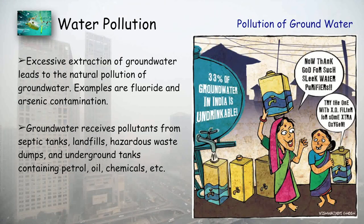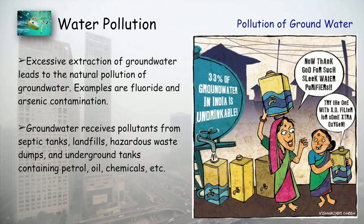Groundwater is also polluted. According to one image, 33% of groundwater in India is undrinkable. Excessive extraction of groundwater leads to natural pollution, with fluoride and arsenic contamination as examples. Groundwater also receives pollutants from septic tanks, landfills, hazardous waste dumps, and underground tanks containing petrol, oil, and chemicals, all of which can leach into groundwater and make it unusable.